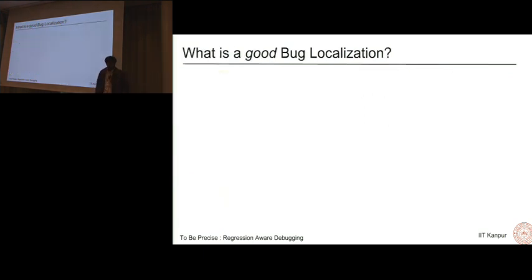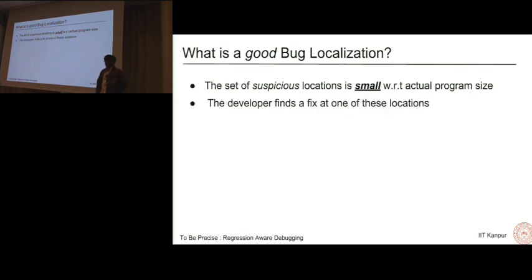What is good bug localization? The set of suspicious locations should be small with respect to the overall code, so the developer doesn't have to go through too many locations to find the fault. It would be really good if the actual fix was in this particular set, so the developer actually finds the fix he was looking for.